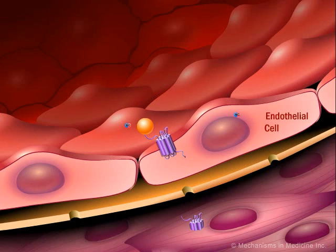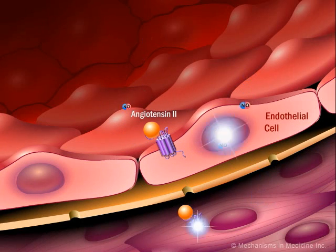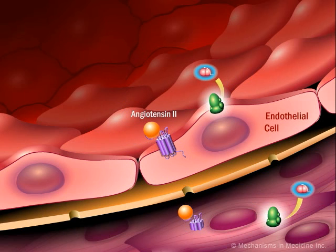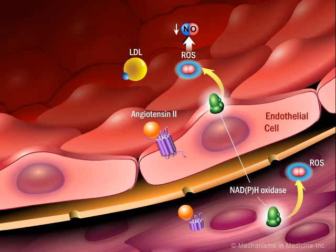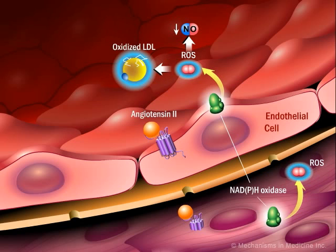Angiotensin II impairs nitric oxide activity by creating oxidative stress through the stimulation of NADH-NADPH oxidase in vascular smooth muscle cells and endothelial cells. Increased levels of reactive oxygen species (ROS) promote oxidation of LDL.